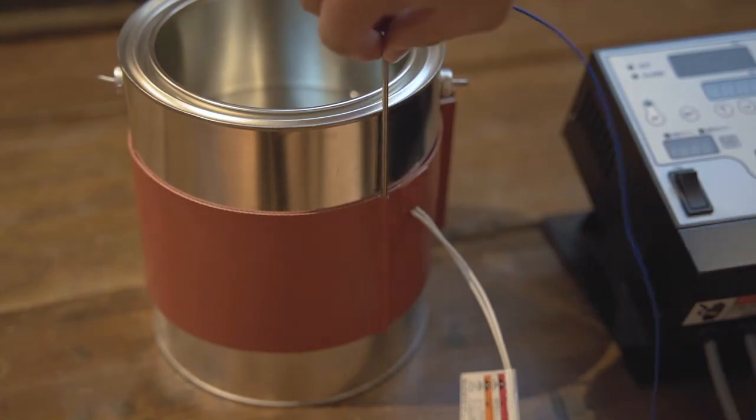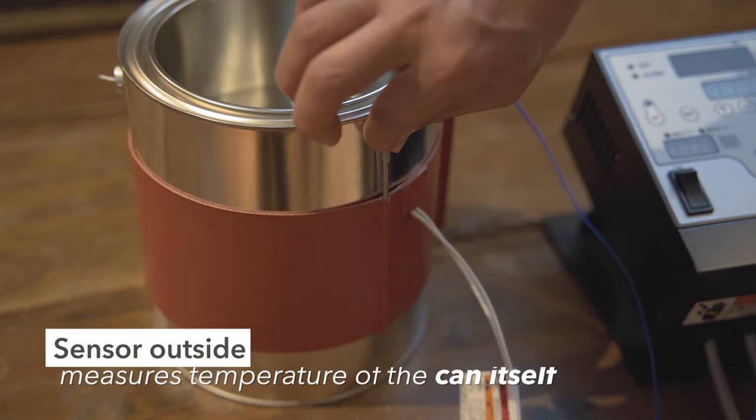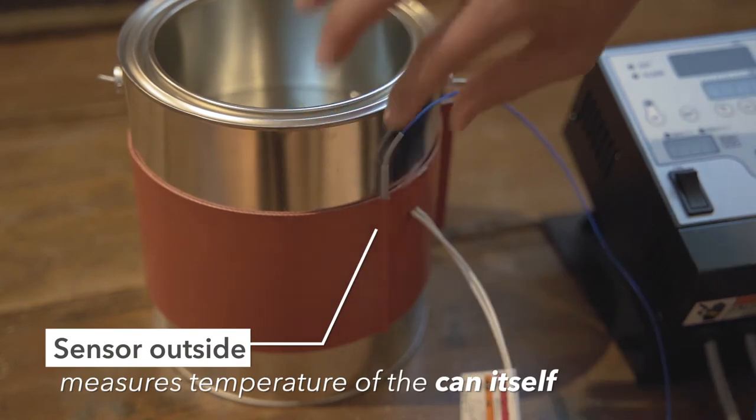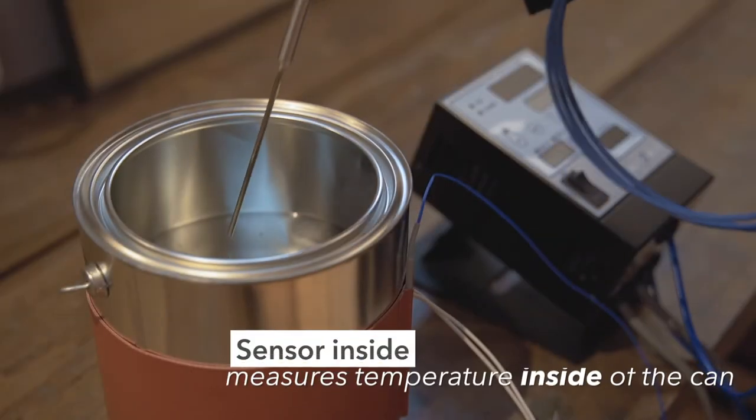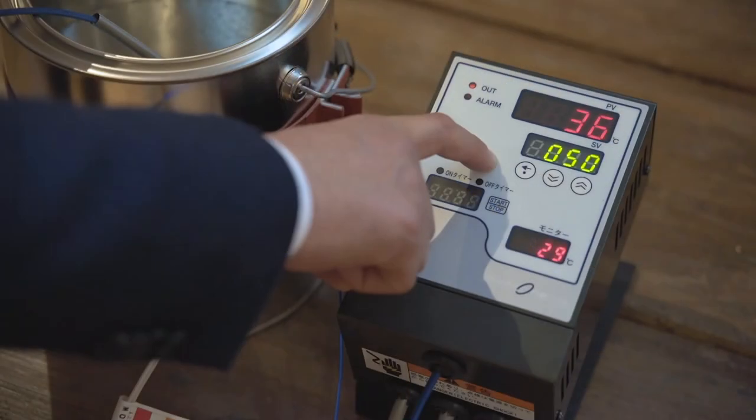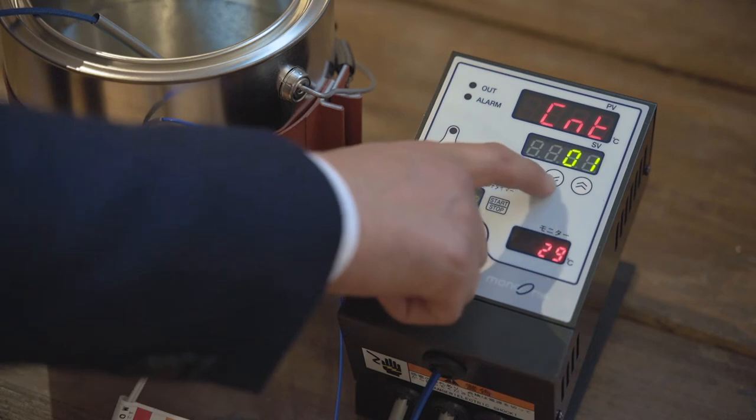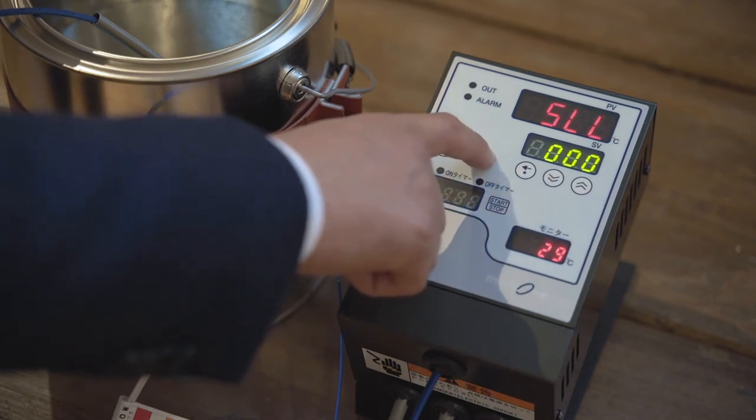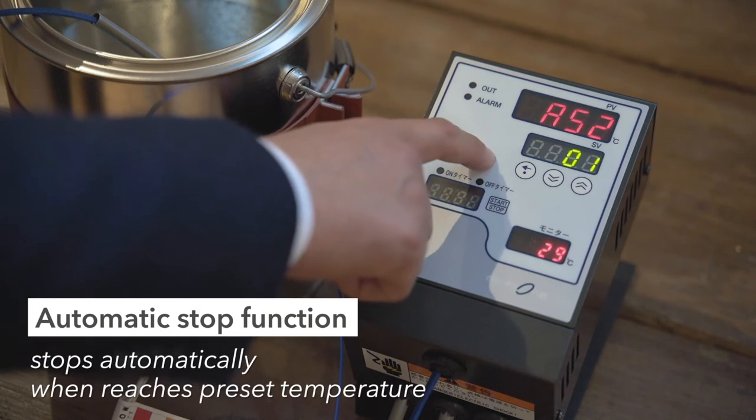This Mono 1 measures not only the temperature of the can itself, but also the temperature inside of the can. When the temperature in the can reaches the preset temperature, it has a function that automatically stops the heater, so you can use it safely.